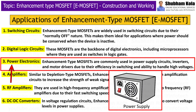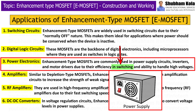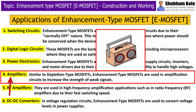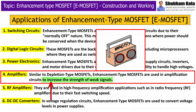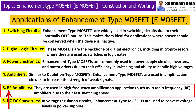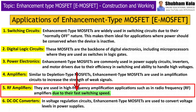Next is power electronics — enhancement type MOSFETs are commonly used in power supply circuits, inverters, and motor drivers due to their efficiency in switching and ability to handle high voltages. Next is amplifiers — similar to the depletion type MOSFETs, enhancement type MOSFETs are used in amplification circuits to increase the strength of weak signals. Next is RF amplifiers — they are used in high-frequency amplification applications such as radio frequency amplifiers, due to their fast switching speeds.